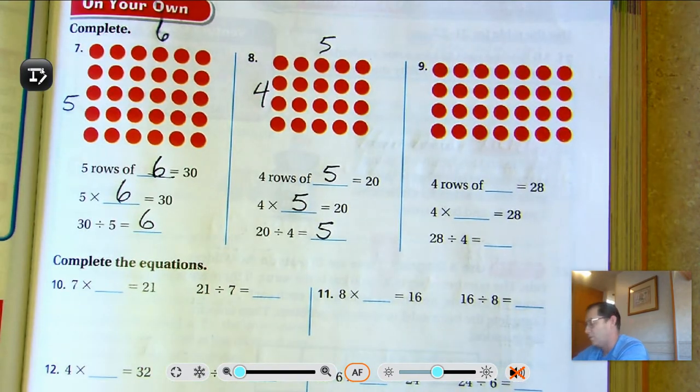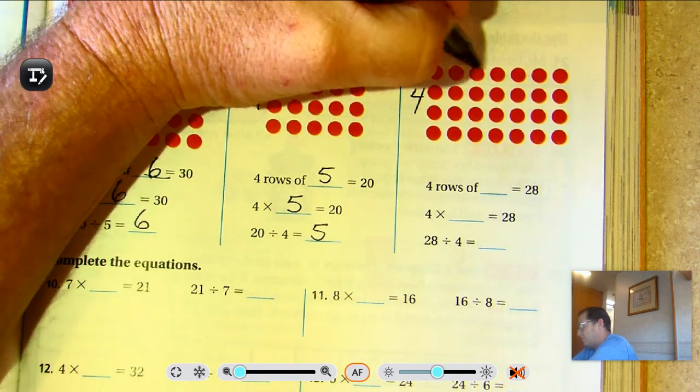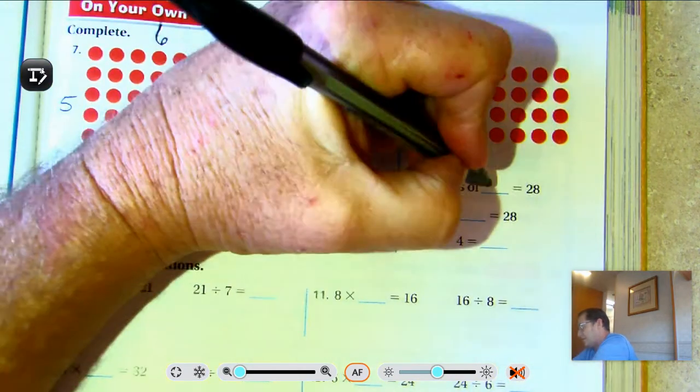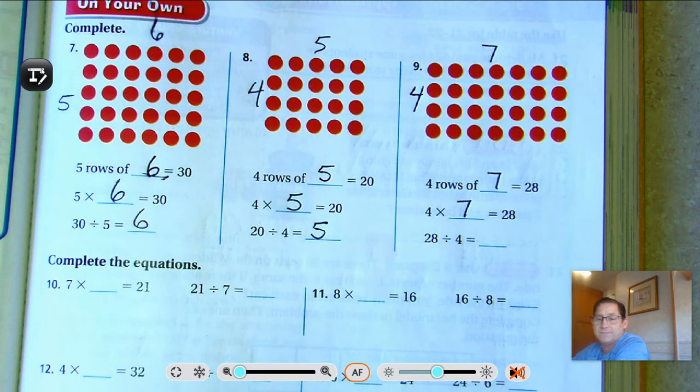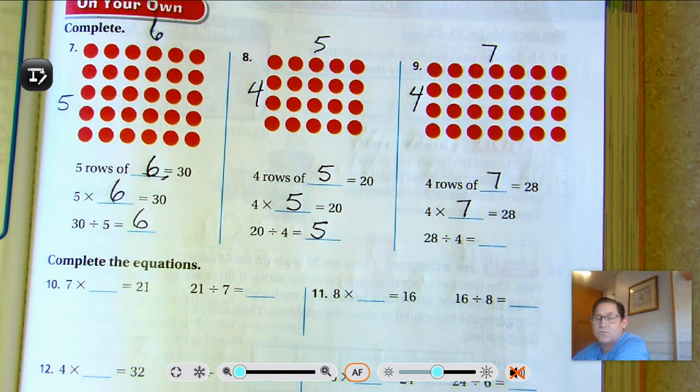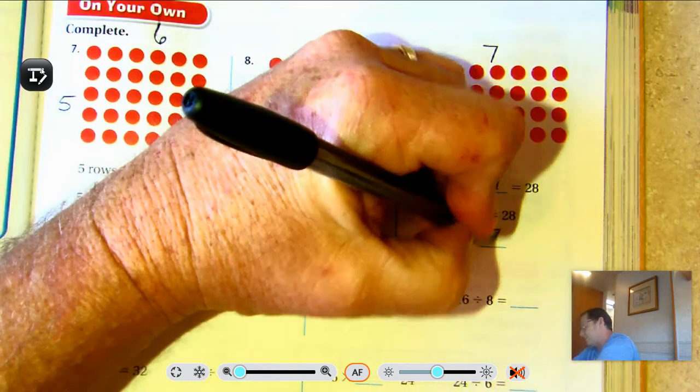Four rows of what is 28? Seven. Four rows of seven is 28. Which is the same as saying four times seven is 28. And 28 divided by four is seven.